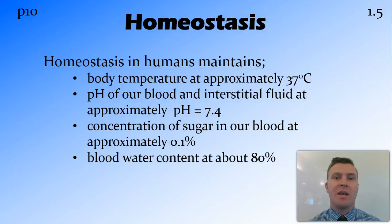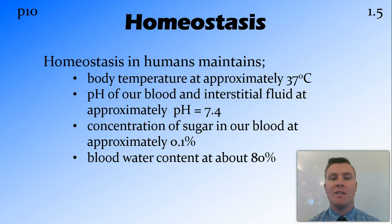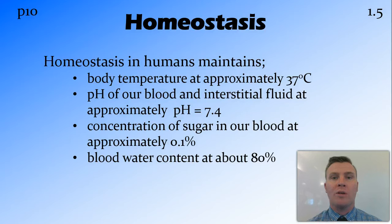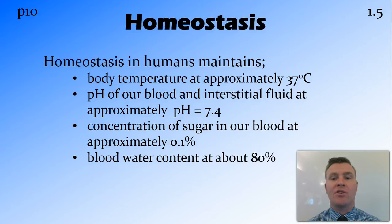Some of the things that are controlled by homeostasis within the body include temperature, which is controlled to be at around 37 to 37.5 degrees. The pH of our blood and interstitial fluid — basically the water between cells — which has a slightly basic pH of 7.4. And the concentration of sugar in our blood, which has to stay at approximately 0.1% sugar.